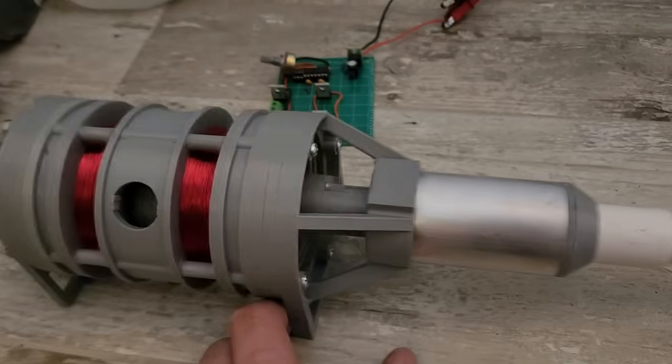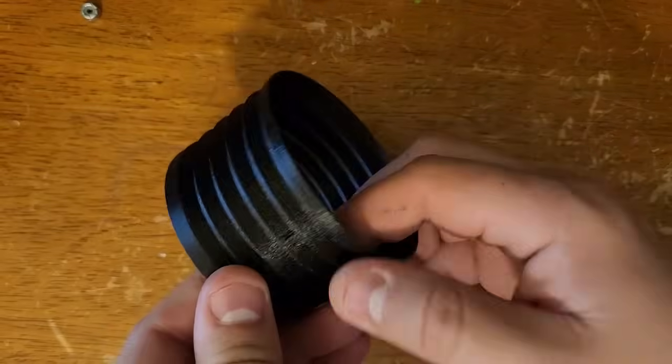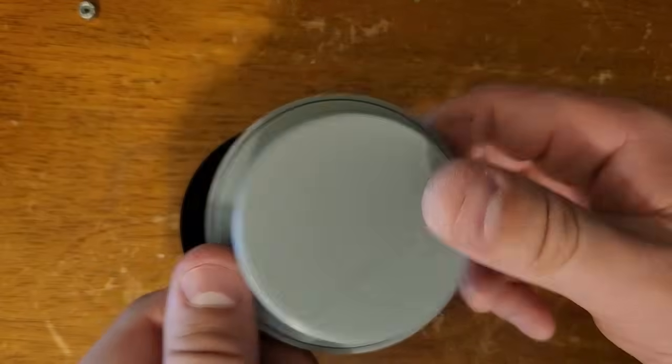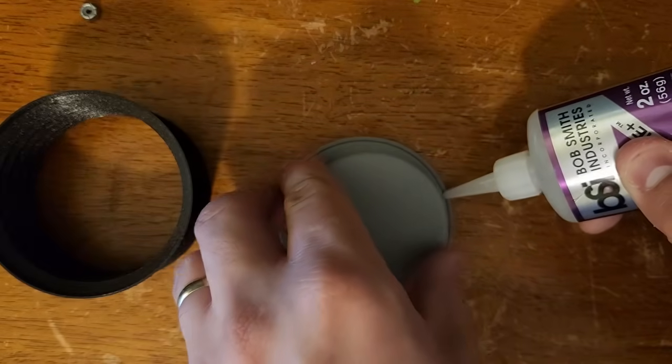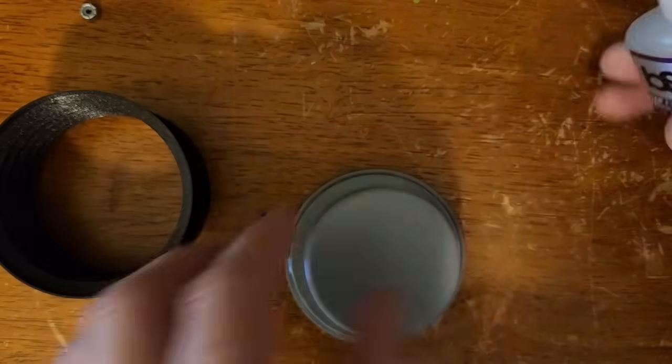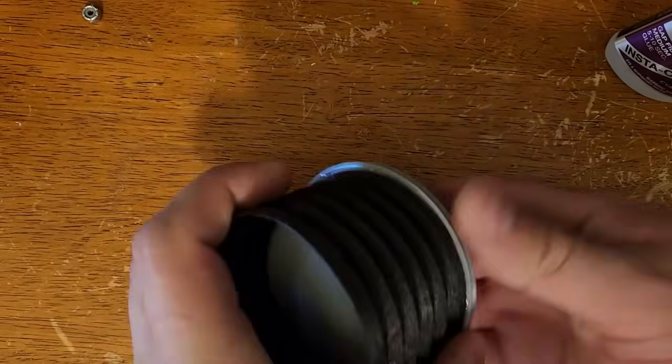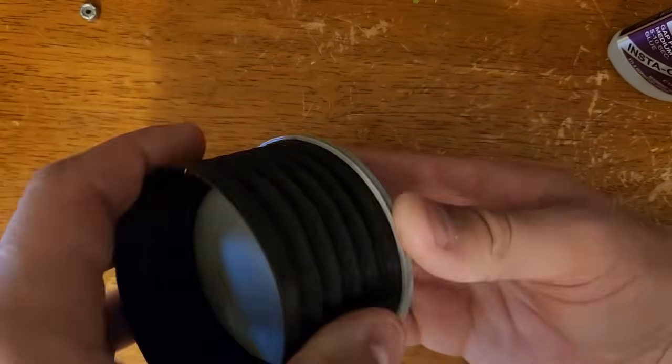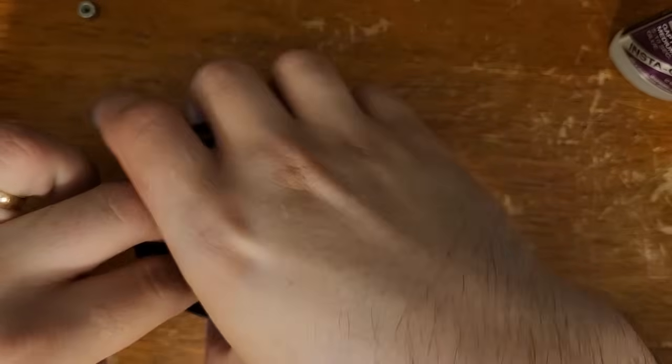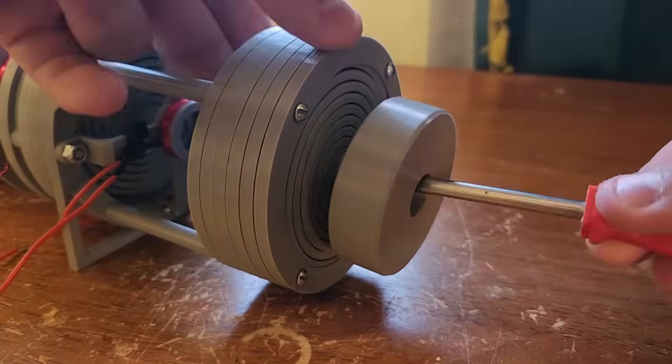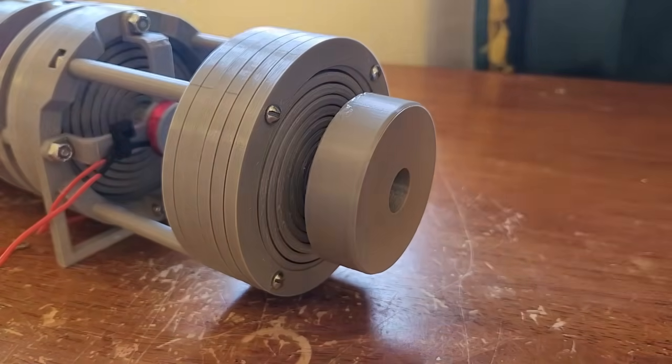I suspected that part of the problem might have to do with the fact that the piston had a pretty bad seal and leaked a ton of air. I already spent a bunch of time fine-tuning it to get a good fit against the cylinder wall so I didn't think I'd be able to make it any better. Instead I changed to an accordion piston which I printed out of TPU. This piston had a much wider bore which meant it should displace more air with the relatively short stroke of my linear motor. Next I added a balancer with a much larger mass to try and get its resonant frequency closer to the motor's frequency which seemed to work pretty well.